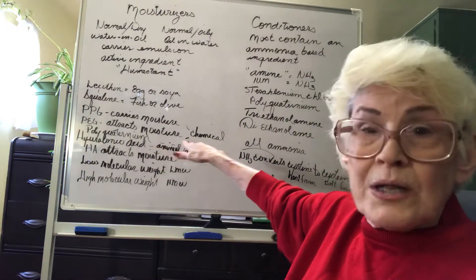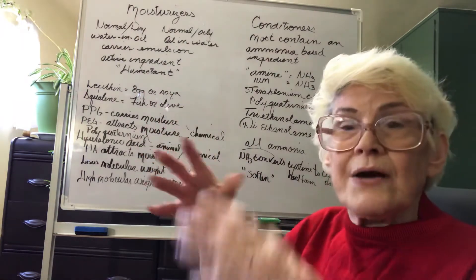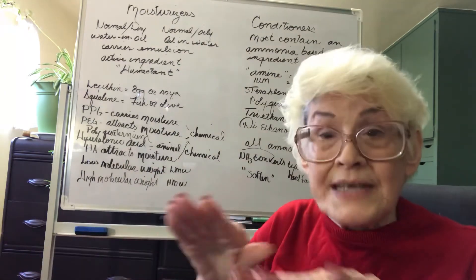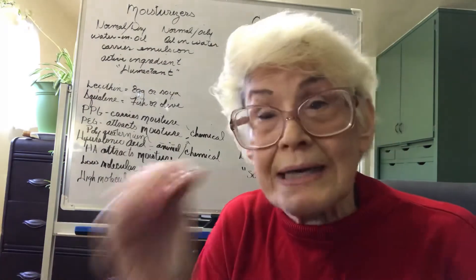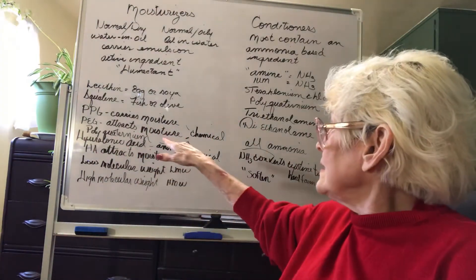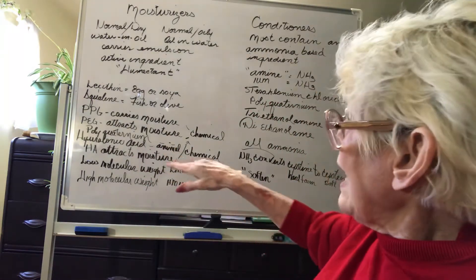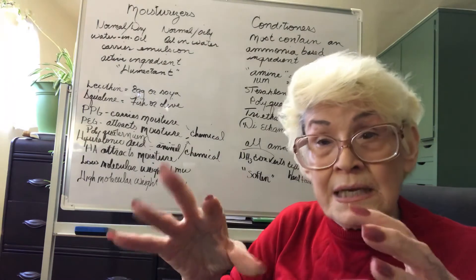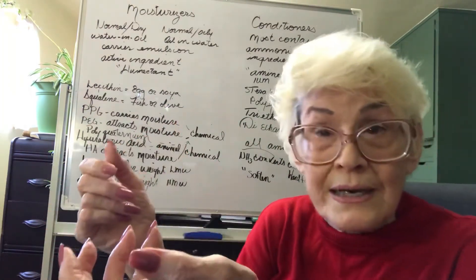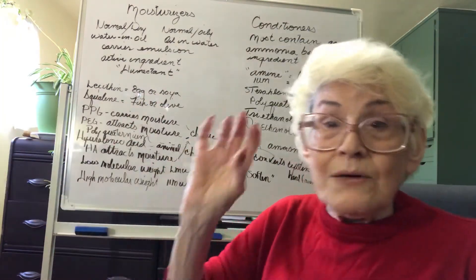PPG (polypropylene glycol) and PEG are two key chemicals. PPG carries moisture within its molecular structure — as soon as the skin absorbs that moisture, it's done; it's a one-time delivery. PEG, on the other hand, works 24/7 because it attracts moisture — it's like a water magnet. Hyaluronic acid (HA) and PEG both pull water to them, so in humid climates like the south or east coast, your skin always looks hydrated because there's moisture in the air to attract.